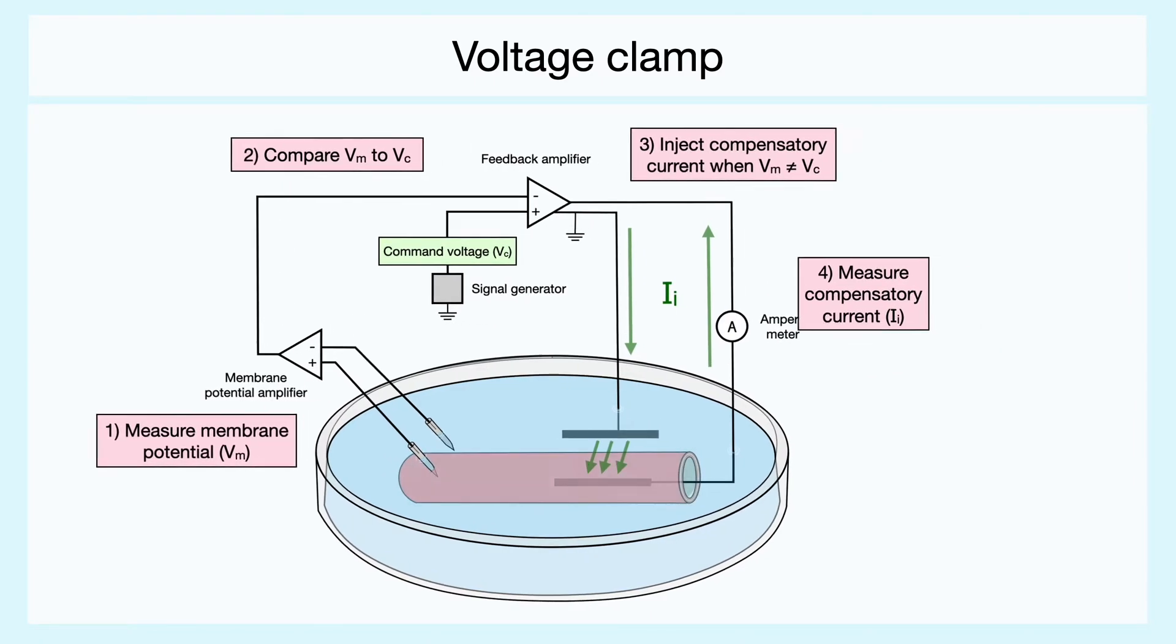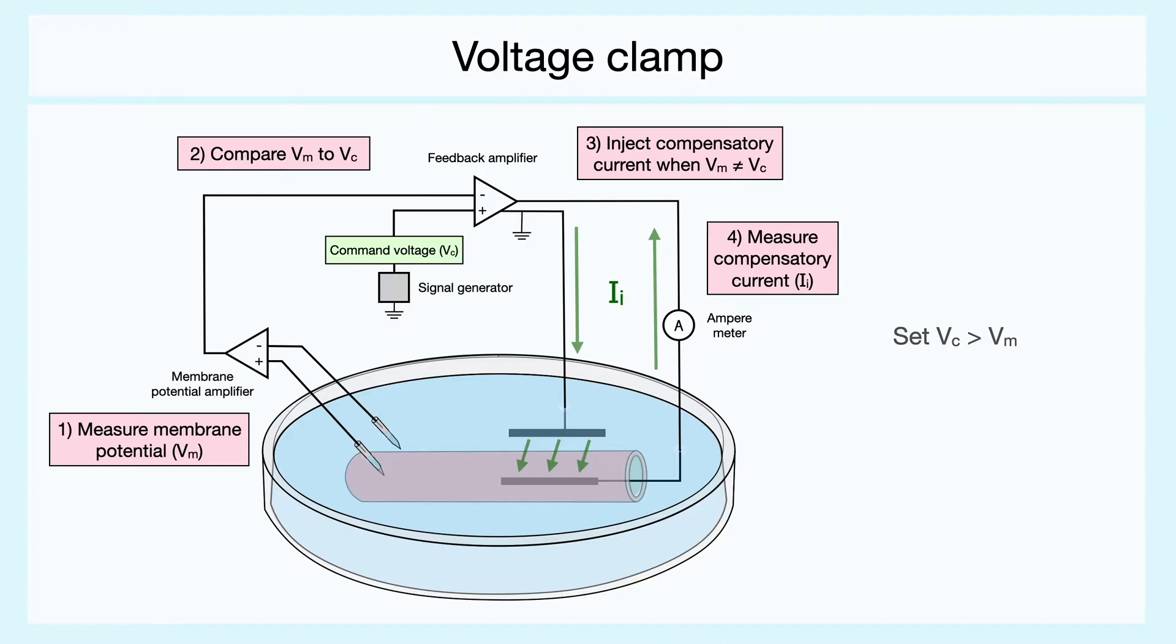To better understand the technique, imagine that we set the command voltage at a higher value than the membrane potential. In this case, to match the command voltage, the membrane potential must get more positive, which implies that the feedback amplifier will inject current into the neuron.